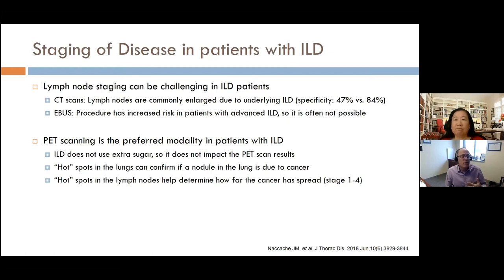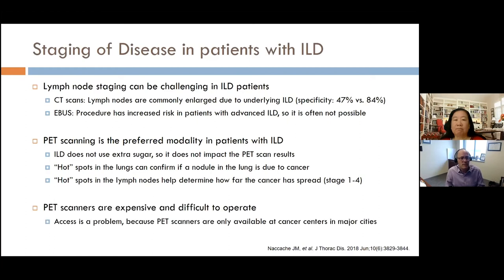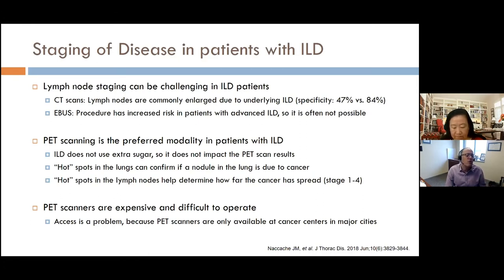Similarly, if lymph nodes are glowing hot on PET, you know that's from the cancer, not the ILD, allowing proper staging. The problem is PET scanners are expensive and difficult to operate. I'm aware that working at Toronto General — one of the biggest hospitals in the world — gives us access to resources not available everywhere. In 2021, most cancer centers in major cities including Canada have PET scanners, but not everywhere. Patients in remote areas like northern Ontario or northern Manitoba may find it very challenging to access one.